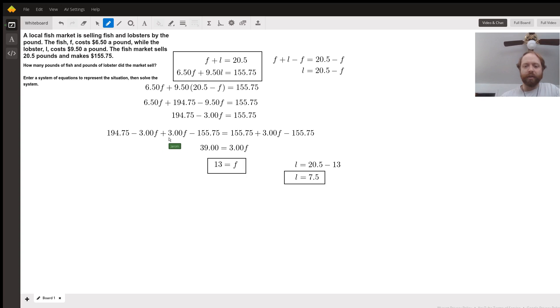Then of course, the $3.00 times F and the $155.75 are going to cancel each other out on their respective sides. We're left with $3.00 times F. So $39.00 equals $3.00 times F. We divide both sides by $3.00. We get that F equals 13.